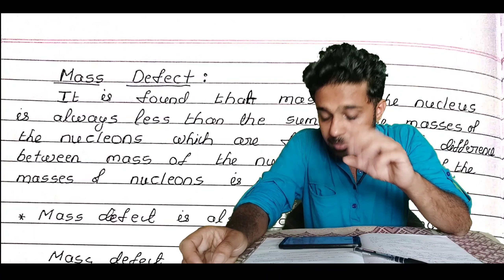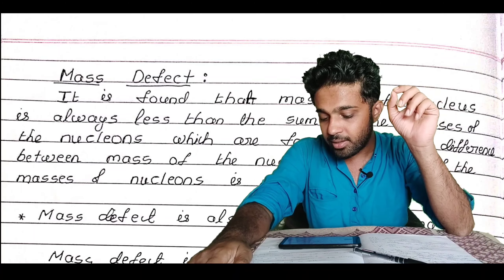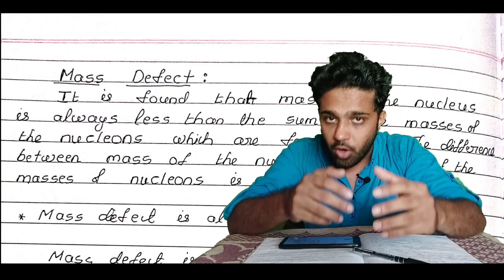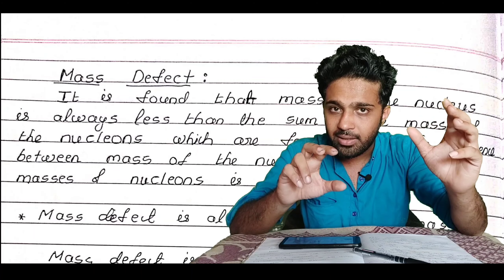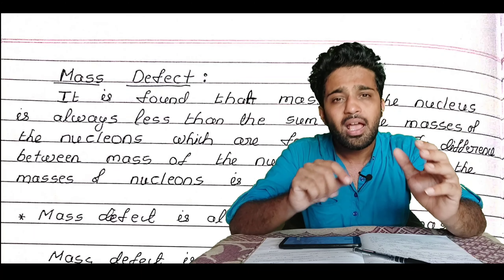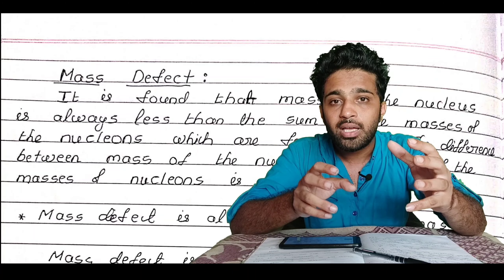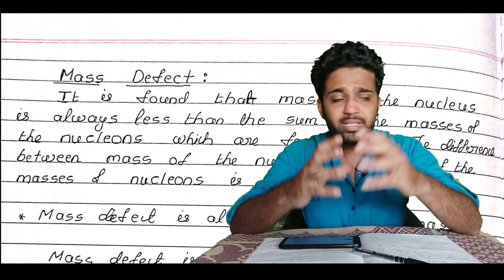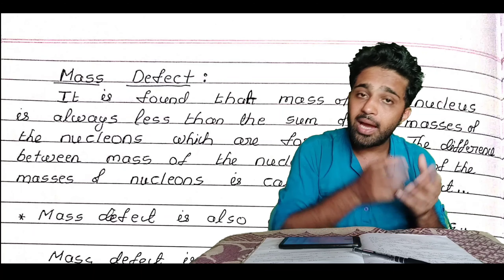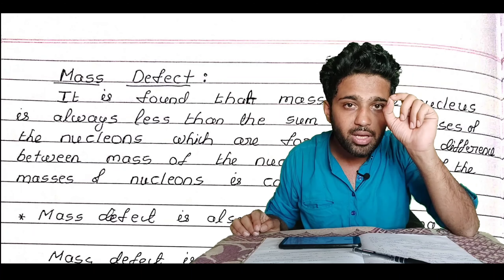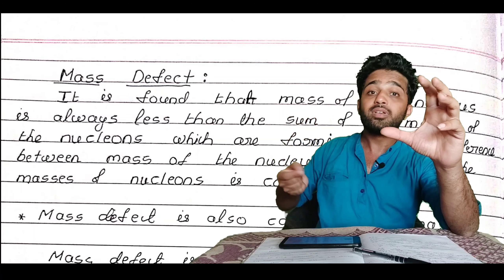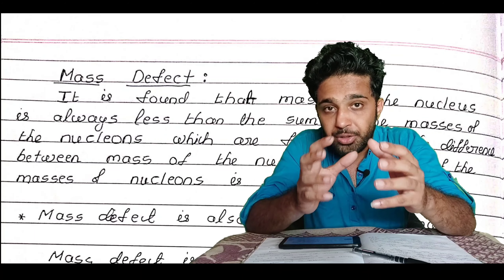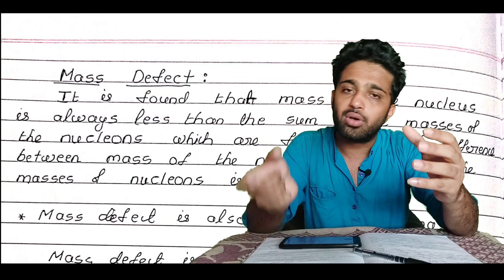Let us start now and understand the meaning of mass defect. It is found that when a nucleus is formed from the nucleons, the mass of the nucleus is always less than the sum of the individual masses of the nucleons. That difference — the mass of the nucleus versus the sum of the masses of the nucleons forming the nucleus — is called mass defect.